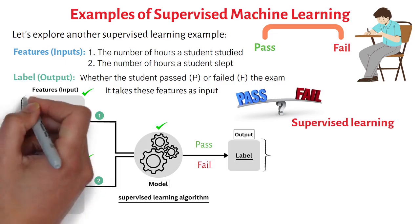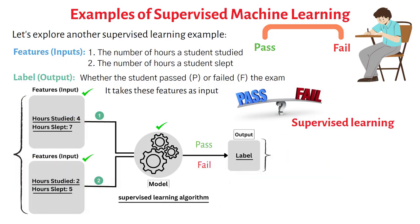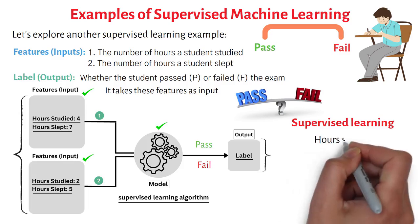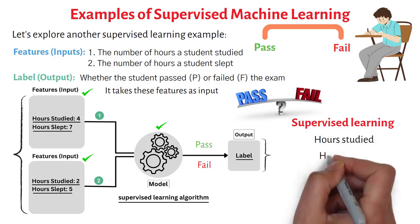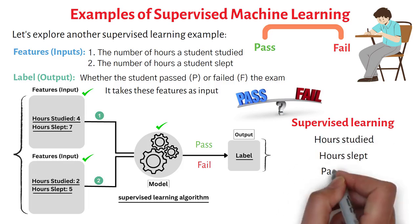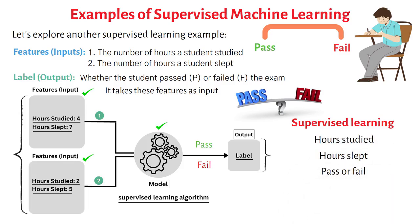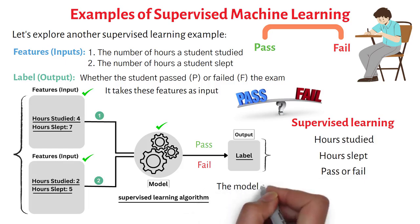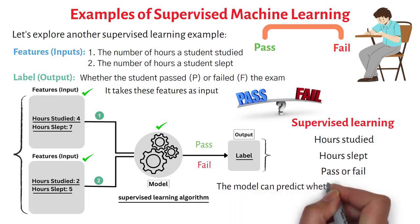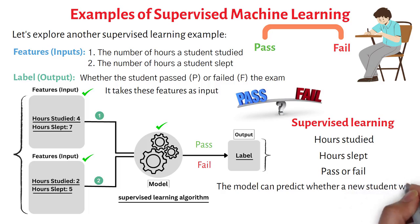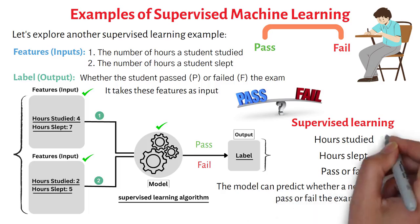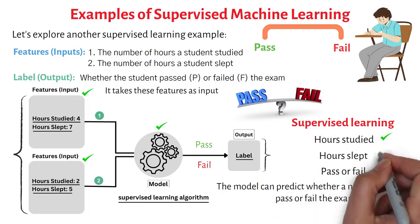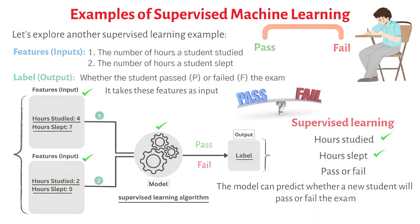Supervised learning, in this example, helps us build a model that understands the relationship between the hours studied, hours slept, and the outcome — pass or fail. Once trained, the model can predict whether a new student will pass or fail the exam based on their study and sleep patterns.